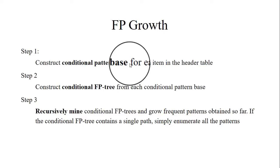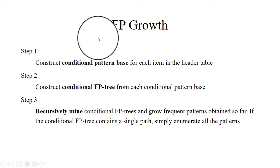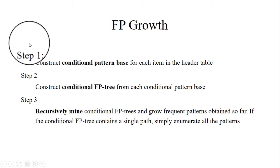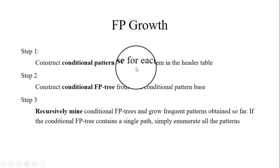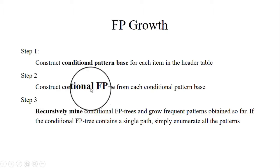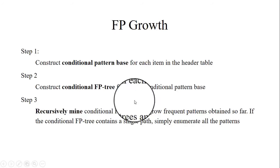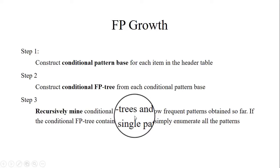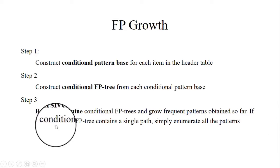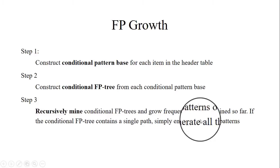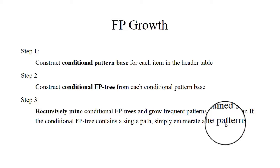To cover these disadvantages, we use the FP Growth — Frequent Pattern Growth algorithm. In FP Growth, we create one FP tree and recursively mine that tree to find frequent item sets. It consists of three steps: construction of conditional pattern base for each item in the header table, construction of conditional FP tree from each conditional pattern base, and then recursively mining the conditional FP tree to grow frequent patterns.